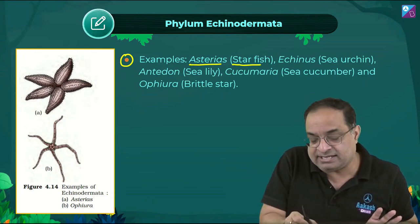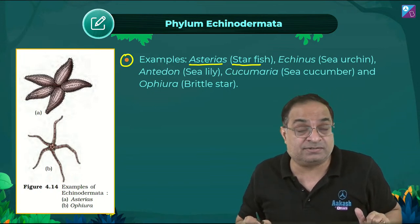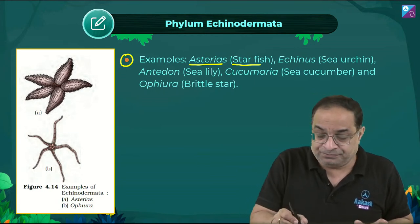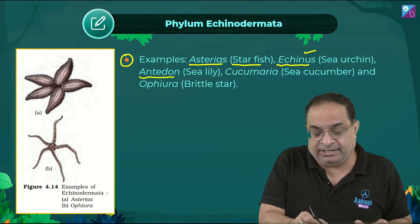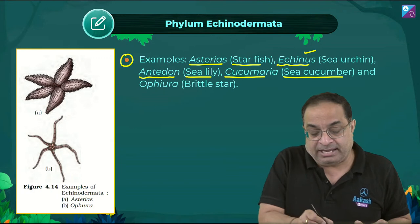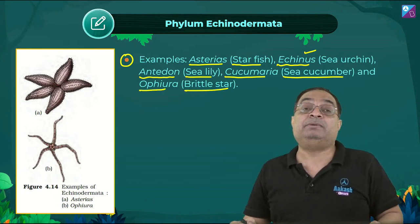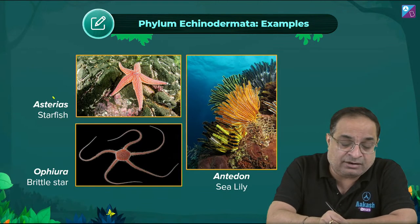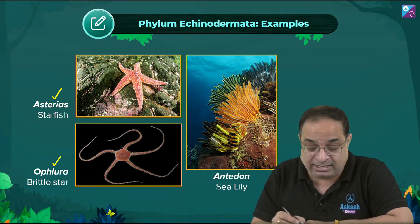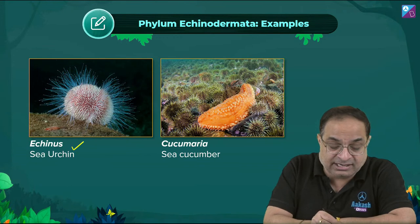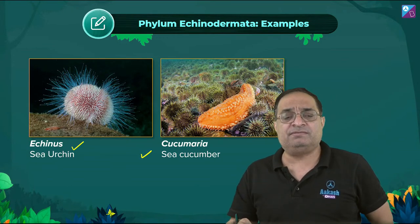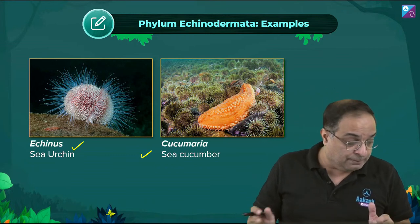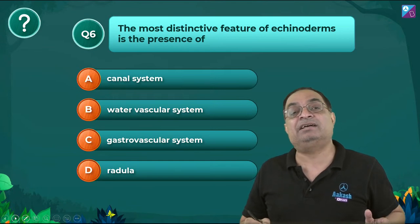Examples of Echinodermata: Asterias (starfish) — has excellent power of regeneration and is harmful to pearl industry; Echinus (sea urchin); Antedon (sea lily); Holothuria (sea cucumber); Ophiura (brittle star). Sea cucumber shows evisceration — it averts its internal organs out through the anus as a self-defense mechanism.